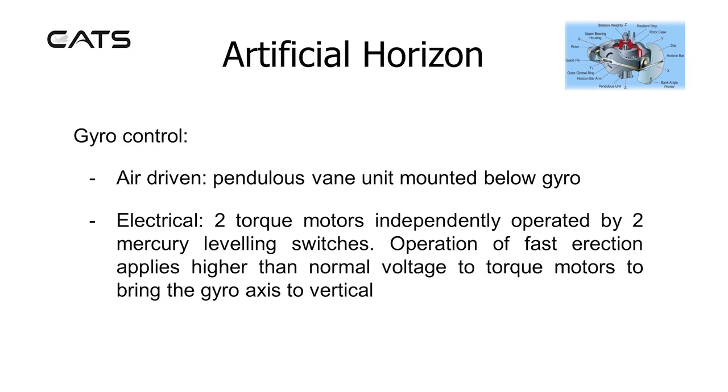Gyro control: In the air-driven artificial horizon, a pendulous vane unit is mounted below the gyro. In the electrical artificial horizon, two torque motors independently operated by two mercury leveling switches exist.